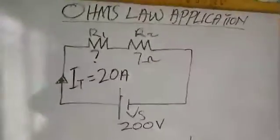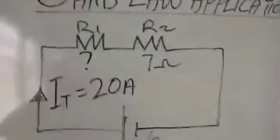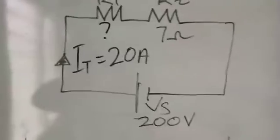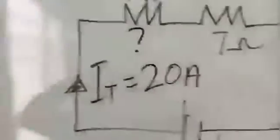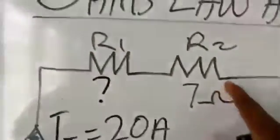Welcome back to my YouTube channel. Today, as you can see on the board, I want to show you how to calculate for the missing resistor. As you can see in this diagram, it's a series circuit where R1 is missing, R2 is known, the total current is known, and the supply voltage is known.